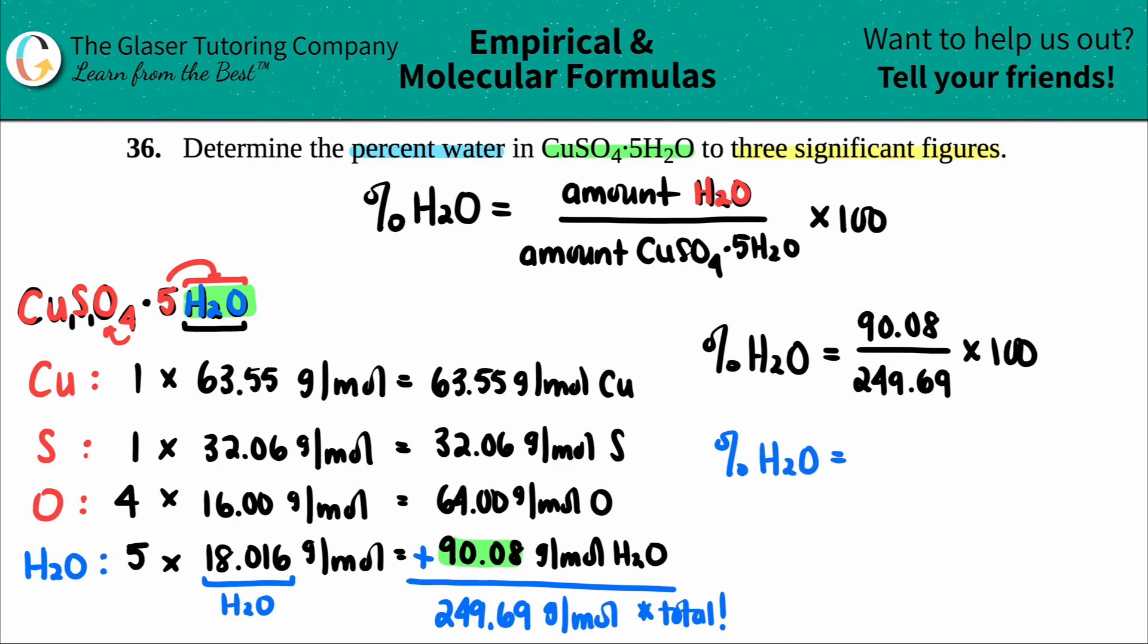Coming down to it, guys, percent of water. Let's see. 90.08 divided by 249.69. And then I times that by 100. And they said three sig figs. So it was 36.07. However, this seven tells me that that zero has to be rounded up. So it's 36.1%. And that is your final answer. So that means that actually, that's an ugly color, percent of H₂O. That means that there's 36.1% out of all the whole, the whole thing is 36.1% water. And that's it.